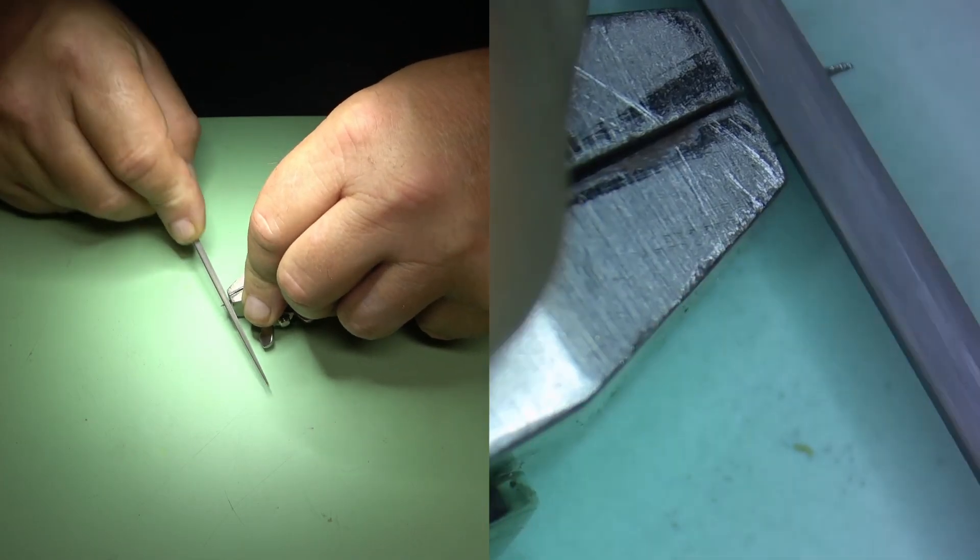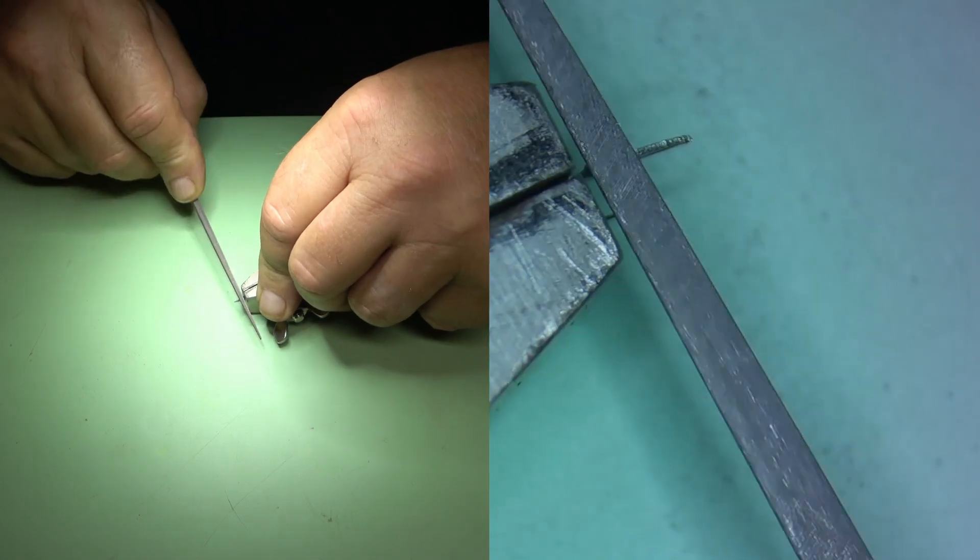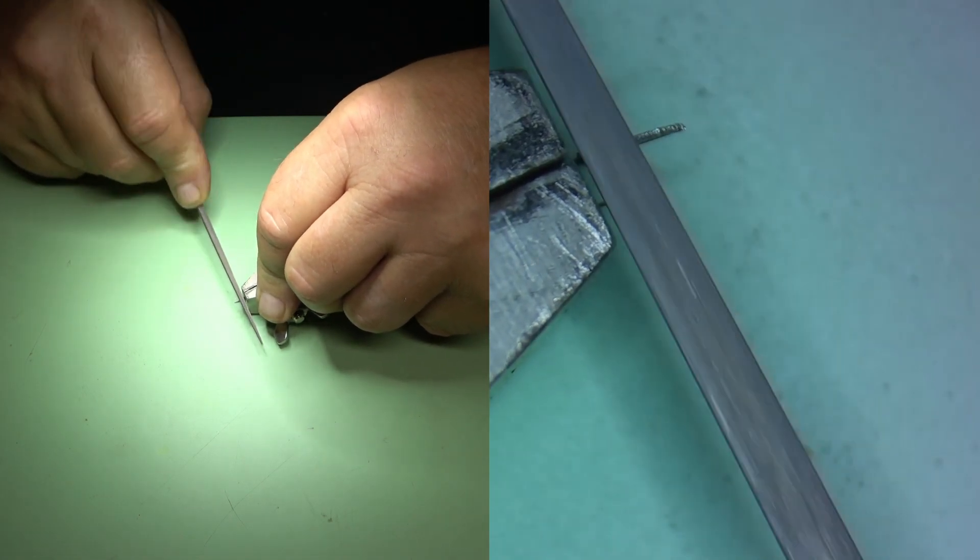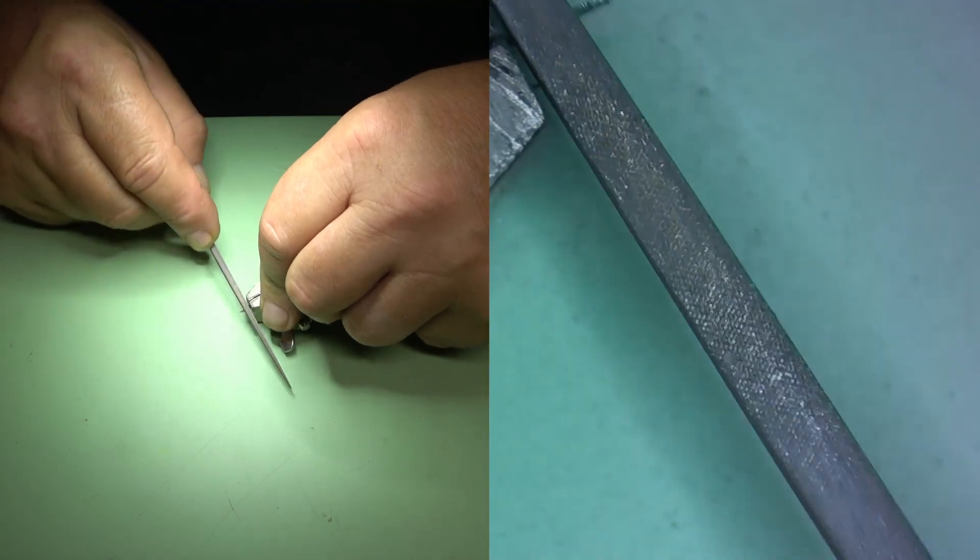To remove the inside material, I'm just going to use a square rat tail file. And I'm just going to try to remove as much of the material as possible from the other side of the blade.